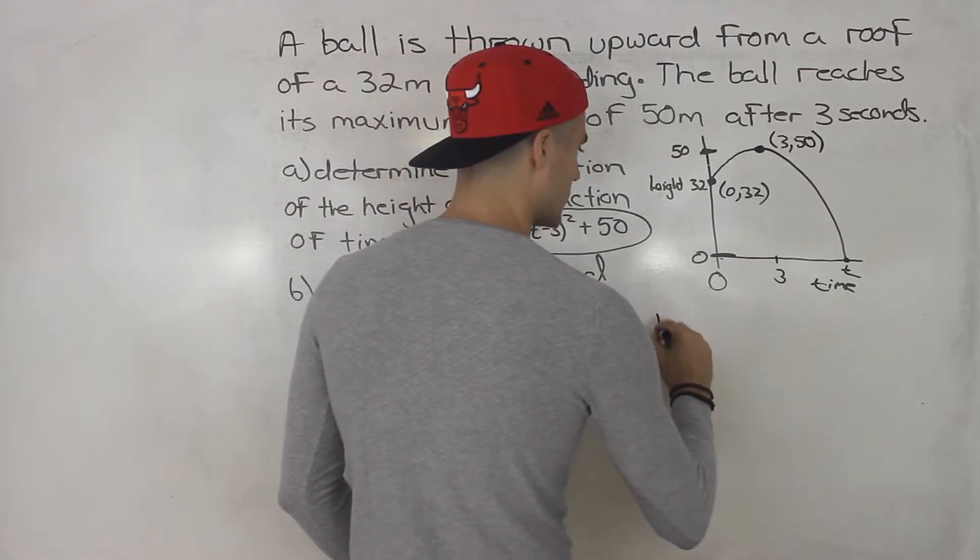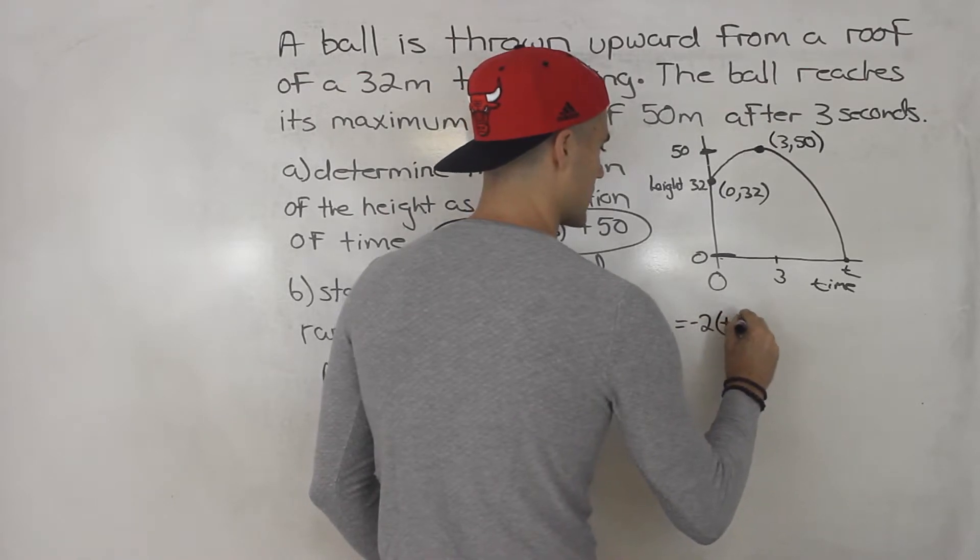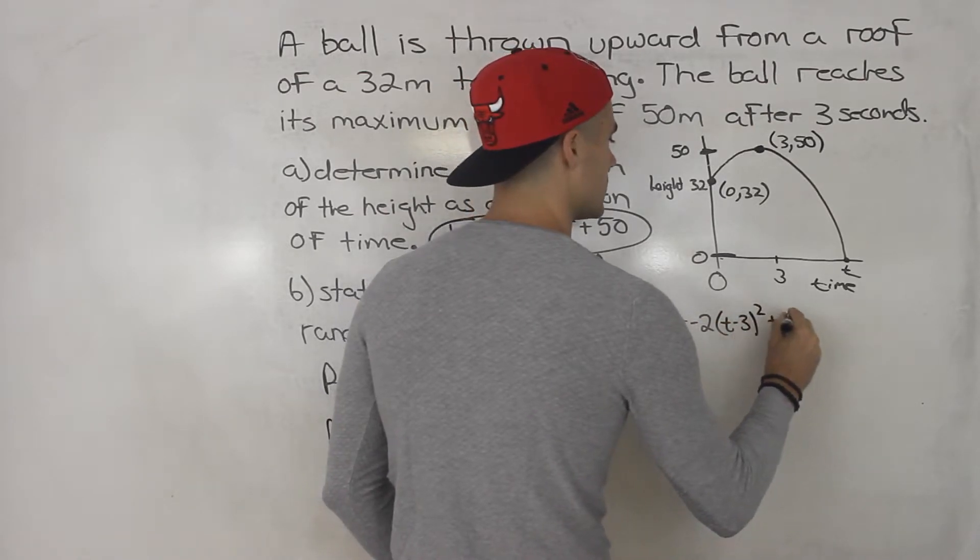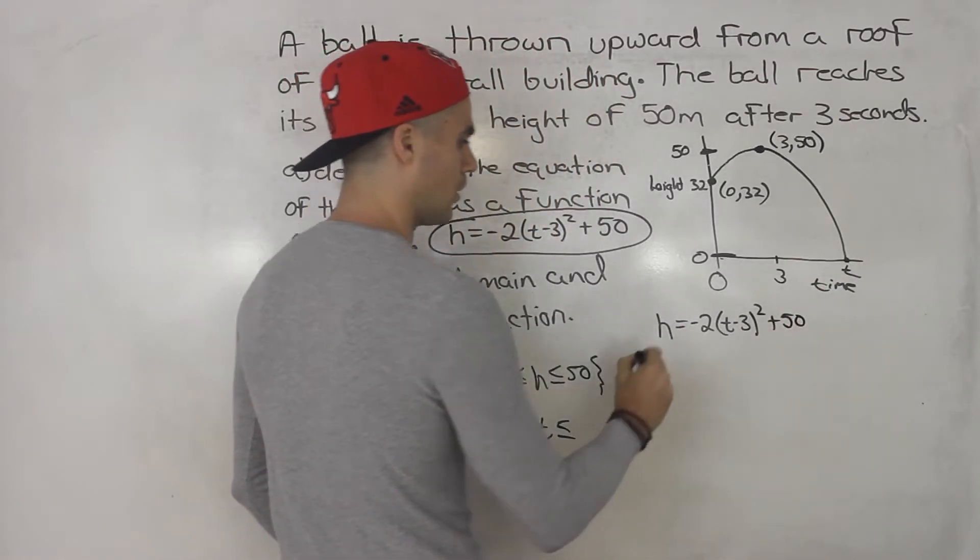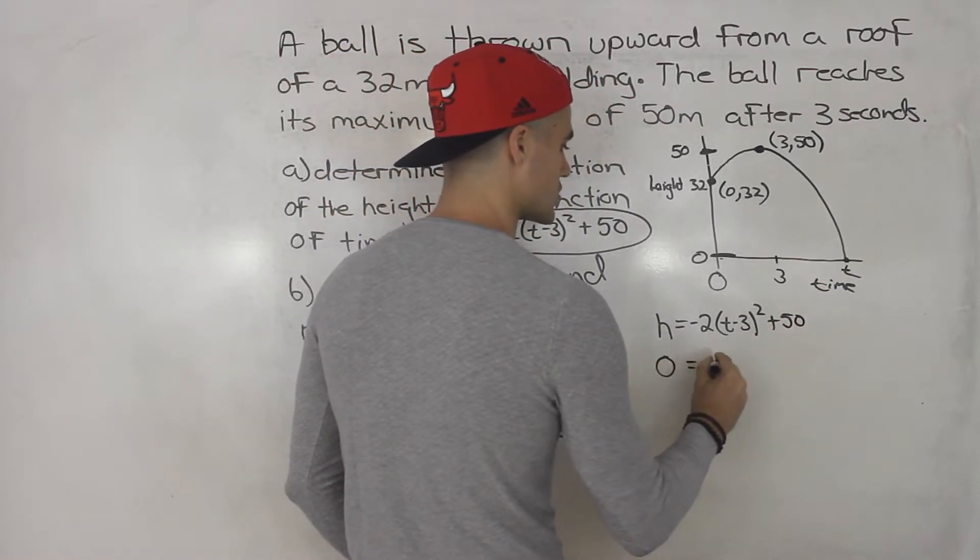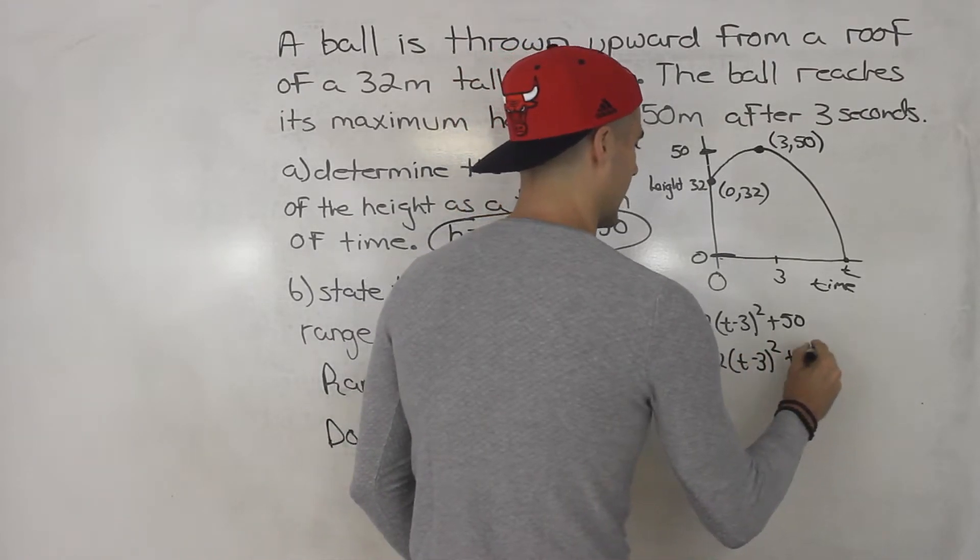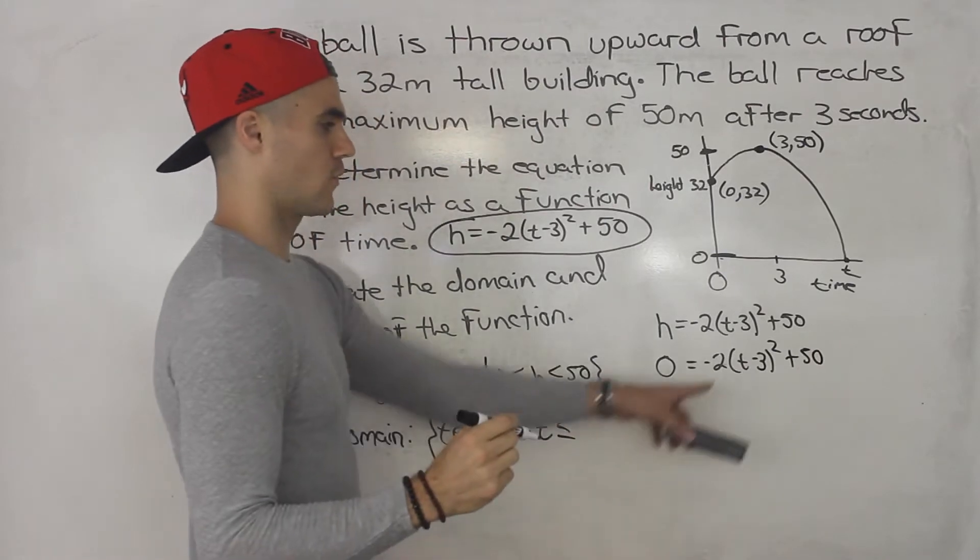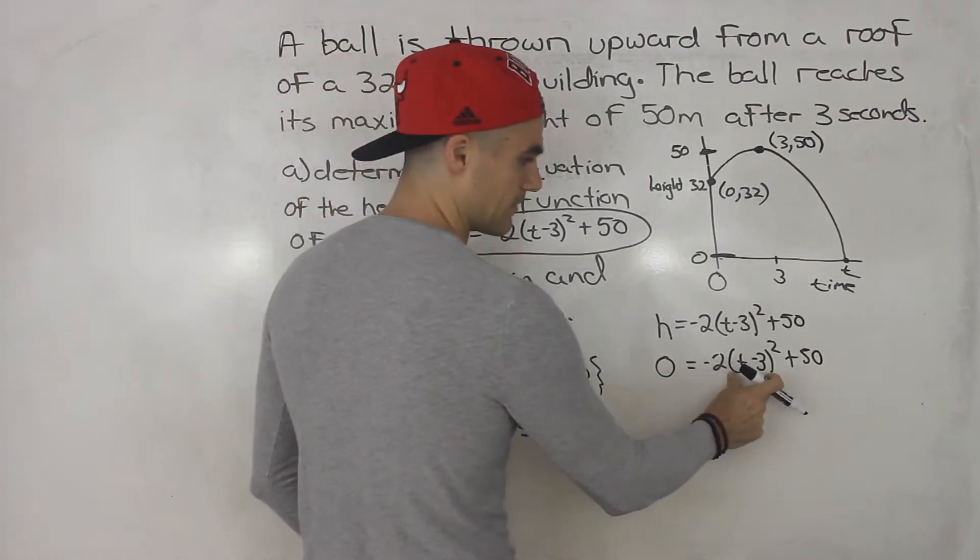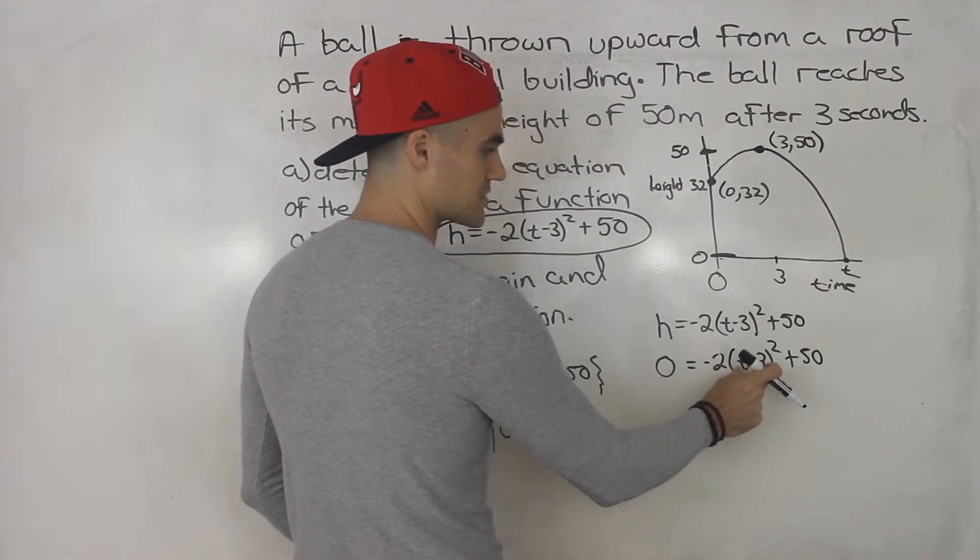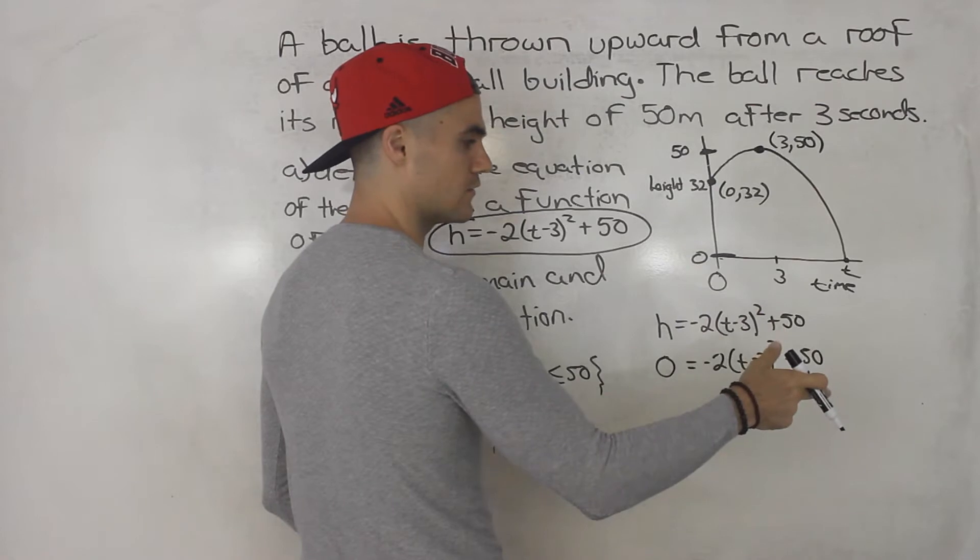And we can do that with the equation that we just found. So we know if we write out the equation, h is negative 2, bracket t minus 3 squared plus 50. How can we solve for when the ball is going to hit the ground? Well, we could plug in 0 for h. And now we can solve for t. Now there's multiple ways to solve for t. You can expand this. So you could foil this out, t minus 3 times t minus 3, then distribute the negative in, and then